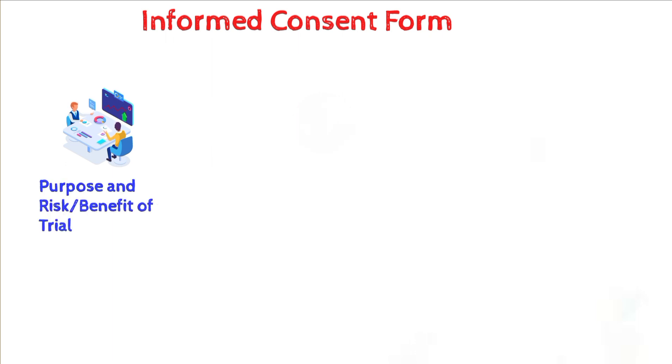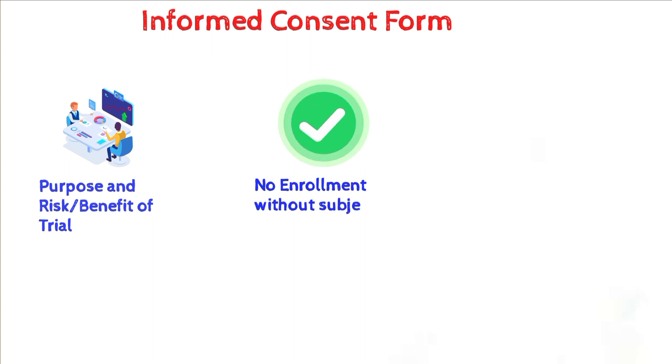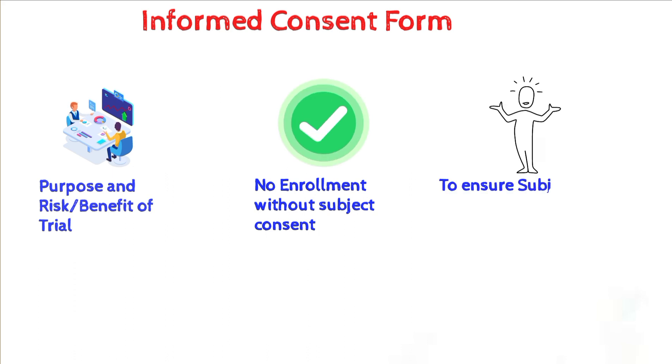The fourth essential document is the Informed Consent Form — another critical document in clinical trials. The Informed Consent Form is designed to inform participants about the purpose, procedures, risks, benefits and alternatives of the trial. Before a participant can enroll, they must sign the Informed Consent Form to indicate that they understand the information provided and agree to participate. It is an important tool for protecting the rights of trial participants.